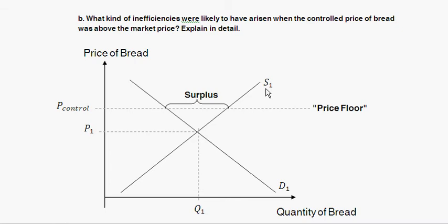Third is inefficiently high quality. There are more sellers than buyers at this price, so sellers seek ways other than price to distinguish themselves — one way is by producing higher-quality bread. But at this price, consumers weren't demanding that higher quality in the first place. It's an unwanted or undemanded increase in quality, which is an inefficiency.